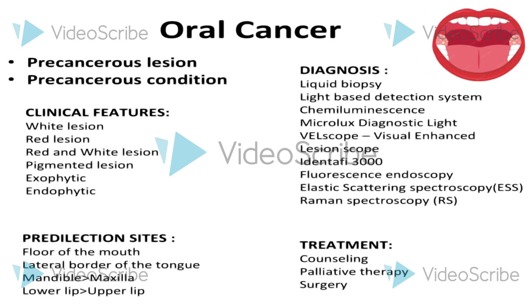Clinically, it can be exophytic and endophytic. Site predilections involve the floor of the mouth, lateral border of the tongue, the mandible is more commonly affected when compared to the maxilla, and the lower lip is affected more commonly when compared to the upper lip.